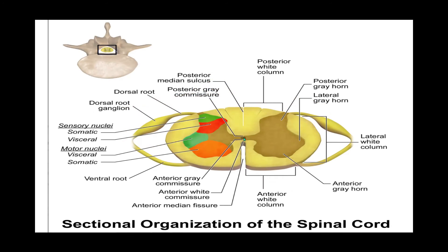The right and left halves of the spinal cord are separated anteriorly by the anterior median fissure, and posteriorly by the posterior median sulcus. The posterior sulcus is less prominent than the anterior fissure. The gray matter has a batwing shape with an anterior horn, a lateral horn, and a posterior horn.